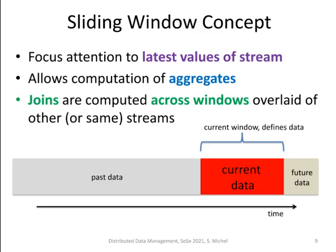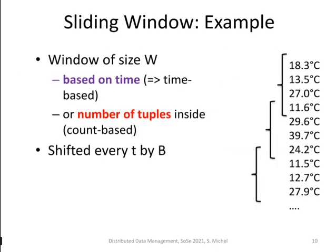Here's an illustration of the sliding window. We focus usually on the latest values of a stream. If we depict time here, then at the current point in time, the current window describes the data we are currently looking at. This can be used to compute aggregates and do joins. We do not know the future data coming in next. Here's an example: we have a window of size W, which is a parameter we can set. For instance, based on time, we might want to monitor cars which passed the street in the last 60 minutes, so the window would be 60 minutes.